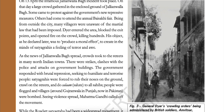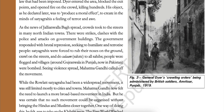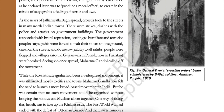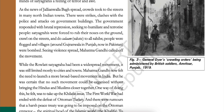Dyer entered the area, blocked the exit points and opened fire on the crowd, killing hundreds. His objective, as he declared later, was to produce a moral effect — to create in the minds of Satyagrahis a feeling of terror and awe. As the news of Jallianwala Bagh spread, crowds took to the streets in many North Indian towns. There were strikes, clashes with the police, and attacks on government buildings. The government responded with brutal repression. Satyagrahis were forced to rub their noses on the ground, crawl on the streets and do salaam to all sahibs. People were flogged and villages around Gujranwala in Punjab, now in Pakistan, were bombed.